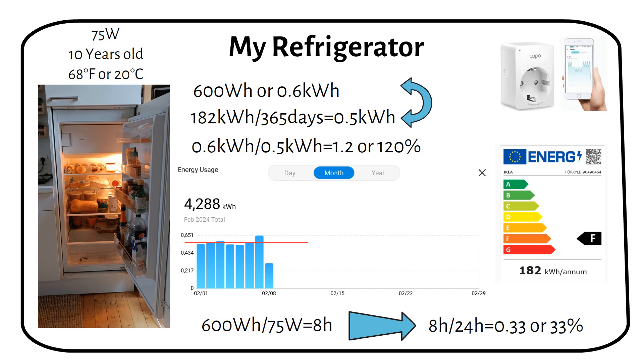Environmental conditions, such as room temperature, play a significant role in the fridge's efficiency. In environments warmer than 68 degrees Fahrenheit, or as appliances age, the duty cycle is likely to increase due to the fridge needing to work harder to maintain its internal temperature. If you found this video helpful so far, a like on the video would be greatly appreciated.